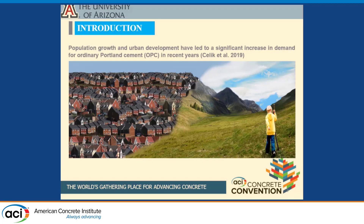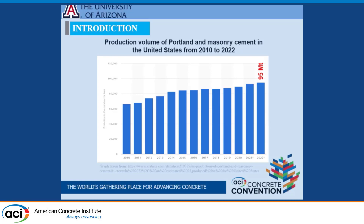With urban development happening, the production of OPC increased during the last decades. From 2010 to 2022, you can see the increase in production of Portland cement in the United States. In 2022, we are talking about 95 million tons of Portland cement and blended cement produced.